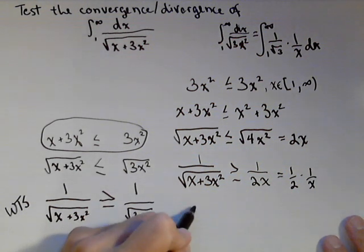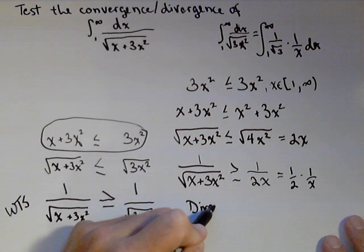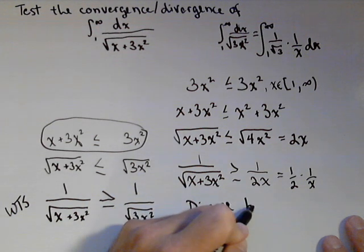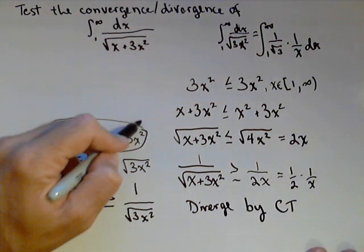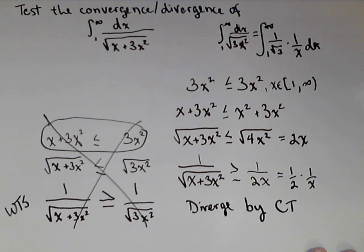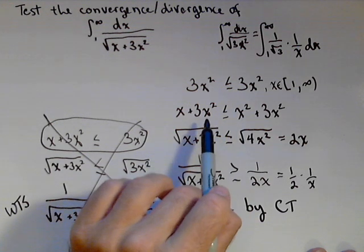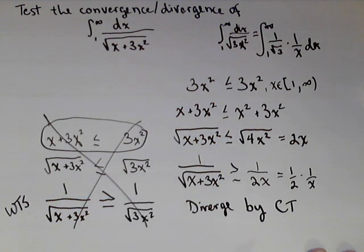Therefore, this thing must diverge by the comparison test. And we got it. So this did not work for us. That's okay. Don't give up. We're able to make it work for us by, nice little trick here, adding x to one side, adding x squared to the other side.